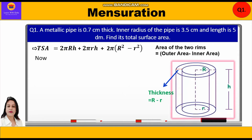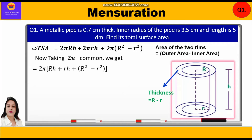Taking 2π common, we get 2π[Rh + rh + R² − r²]. We then factor further by taking h common: 2π[h(R + r) + (R² − r²)].